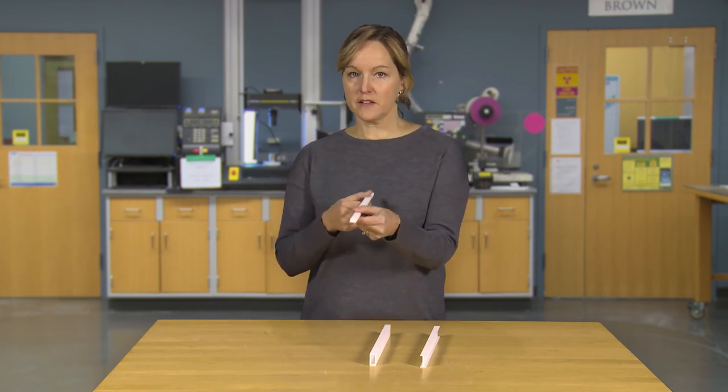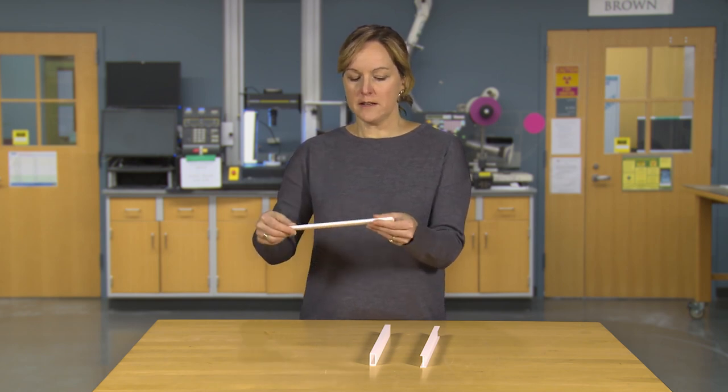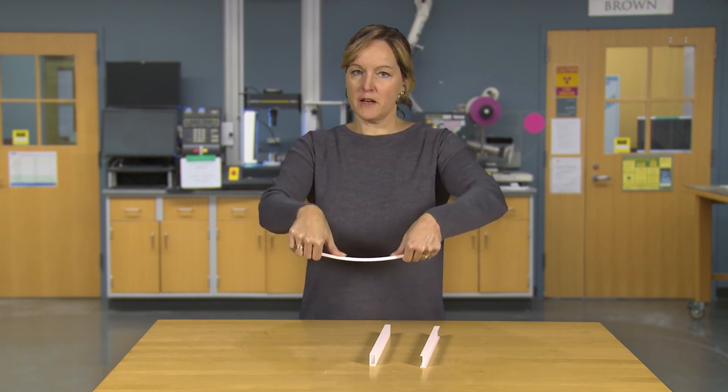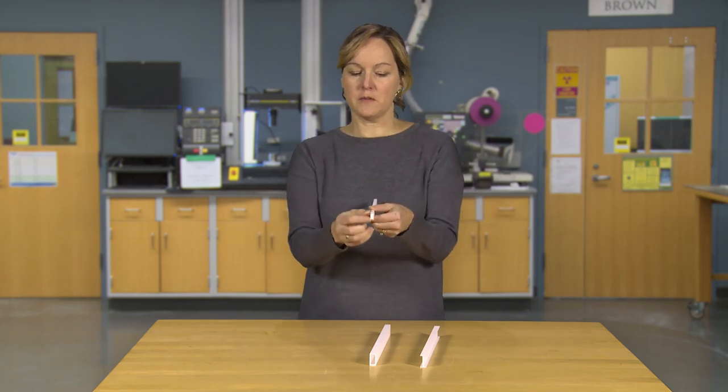If we look at just this rectangular section, it's a longer dimension in one dimension. It's easier for me to bend it this way. You could try this with a ruler if you had it too. It's easier to bend it one direction than the other. It's much harder for me to bend it when the beam is oriented vertically.